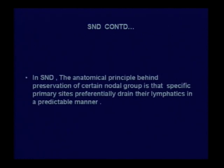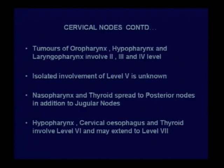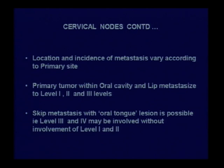The principle of selective neck node dissection is that you preserve certain groups of lymph nodes because specific primary sites preferentially drain their lymphatics in a predictable manner. Tumors of oropharynx, hypopharynx, and laryngopharynx involve levels 2, 3, and 4. Thyroid, hypopharynx, and cervical esophagus involve levels 6 and 7. Primary tumors from the oral cavity and lip metastasize to levels 1, 2, and 3. For oral cavity primary tumors, there is no need to remove posterior cervical lymph nodes.